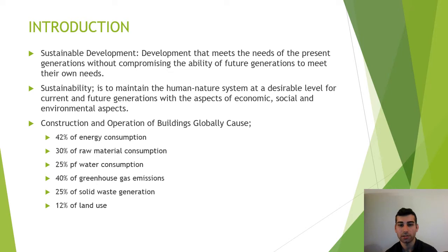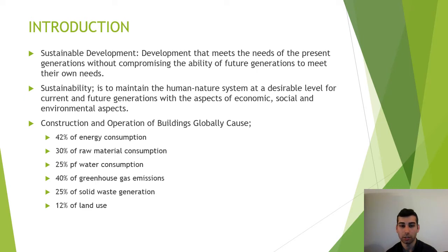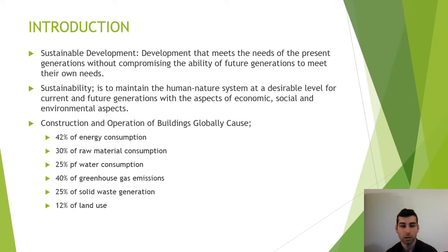This description was made in the Brundtland Report in 1987. Sustainability is defined as maintaining the human-nature system at a desirable level for current and future generations across economic, social, and environmental aspects — described in the literature as the triple bottom line. The construction industry accounts for 42% of energy consumption, 40% of material consumption, 30% of raw material consumption, 25% of water consumption, 40% of greenhouse gas emissions, 25% of solid waste generation, and 12% of land use globally.